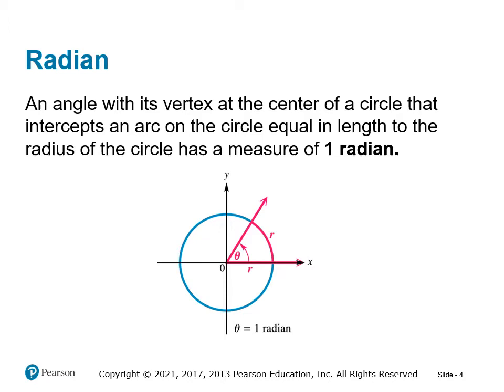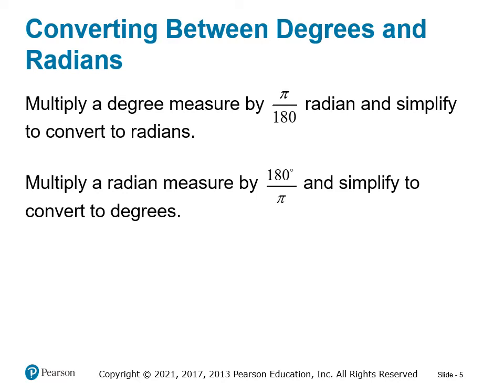Our definition of a radian is an angle with its vertex at the center of a circle that intercepts an arc on the circle equal in length to the radius of the circle — that has a measure of one radian. This arc length, you see this curvature of the circle — kind of like the crust of a pizza pie — is the same measurement as the radius of the circle. If the arc length and the radius are the same, then the angle measure is one radian.